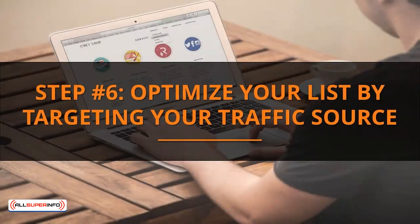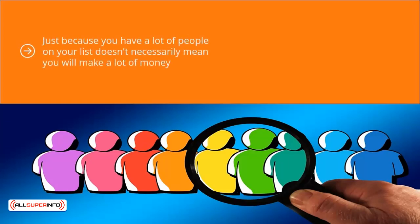Step number six: optimize your list by targeting your traffic source. Just because you have a lot of people on your list doesn't necessarily mean you will make a lot of money. There are a lot of list marketers with huge bloated lists but are struggling. The reason is that they made the all too common mistake of assuming that the more the merrier — that's not going to cut it in modern email marketing. You need to get the right people on your list.